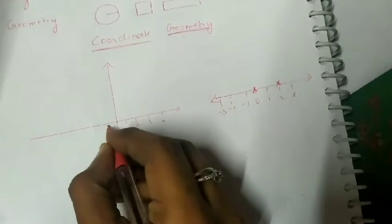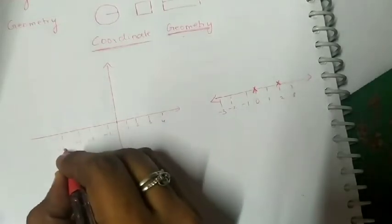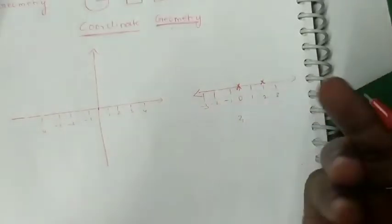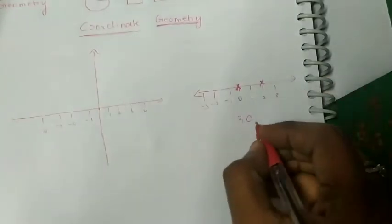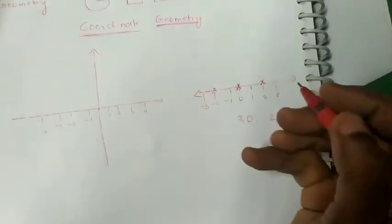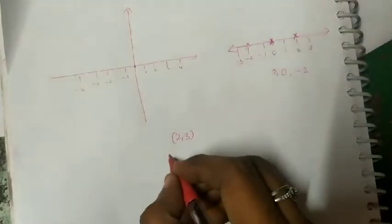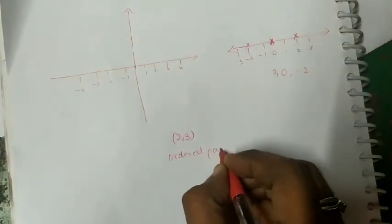The same number line, we are going to put here also — this is the origin, and here 1, 2, 3, 4 and minus 1, minus 2, minus 3, minus 4. Suppose if you are given numbers like 2, you can plot it. If they ask for 0, you can mark it. If they ask for minus 2, you can mark it. Suppose they ask you to plot (2, 3) — that is a pair, which has two numbers. This is known as ordered pairs.